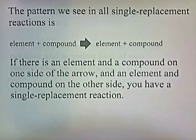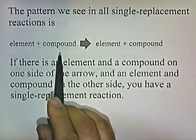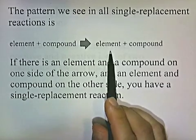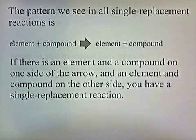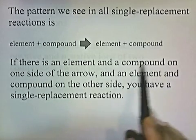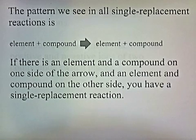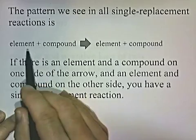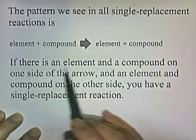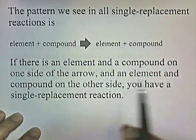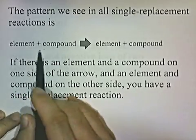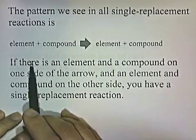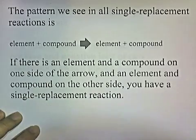The pattern we see in all these examples is: element plus compound gives element plus compound. So if there's an element and a compound on one side of the arrow and an element and a compound on the other side, you have a single replacement reaction. It doesn't matter what order element and compound is listed, as long as you have one of each on each side.